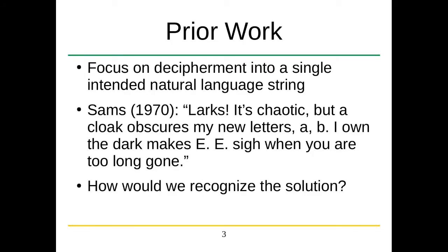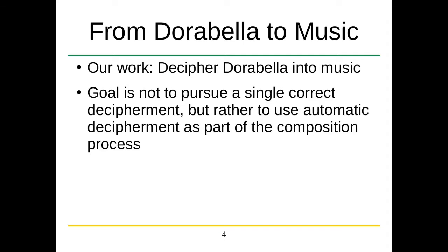Prior work has tried to decipher the Dorabella Cipher as natural language text, and the focus of decipherment has typically been in a natural language setting. For instance, Sam's in 1970 came up with a decipherment: "Larks, it's chaotic, but a cloak obscures my new letters A, B. I own the dark, makes E, E sigh, when you are gone too long." How would we recognize this as a solution? We'd probably have to use some kind of model that would say whether or not a solution was legitimate. Sam's probably did this by hand, using his own brain to suggest that's a plausible solution.